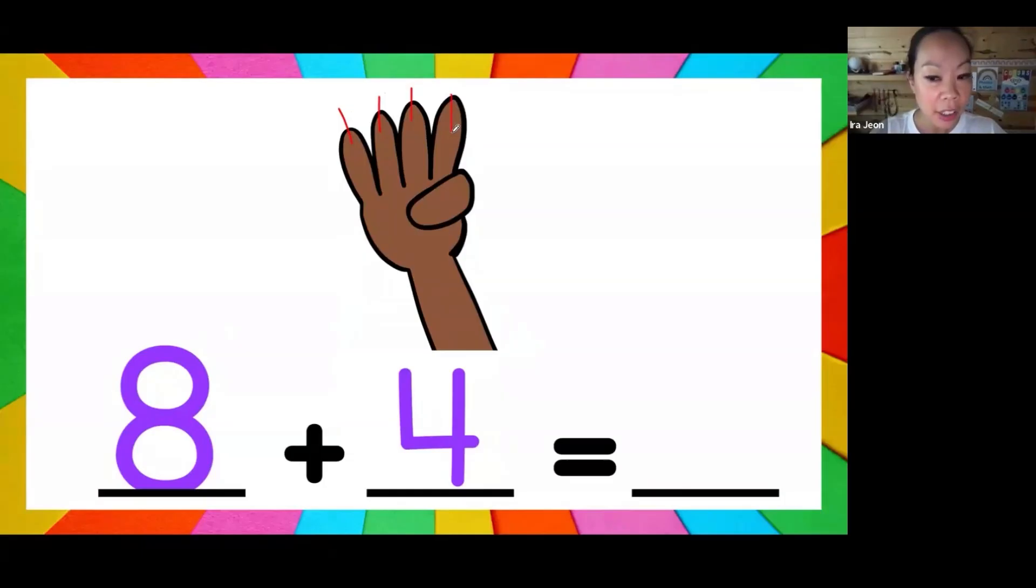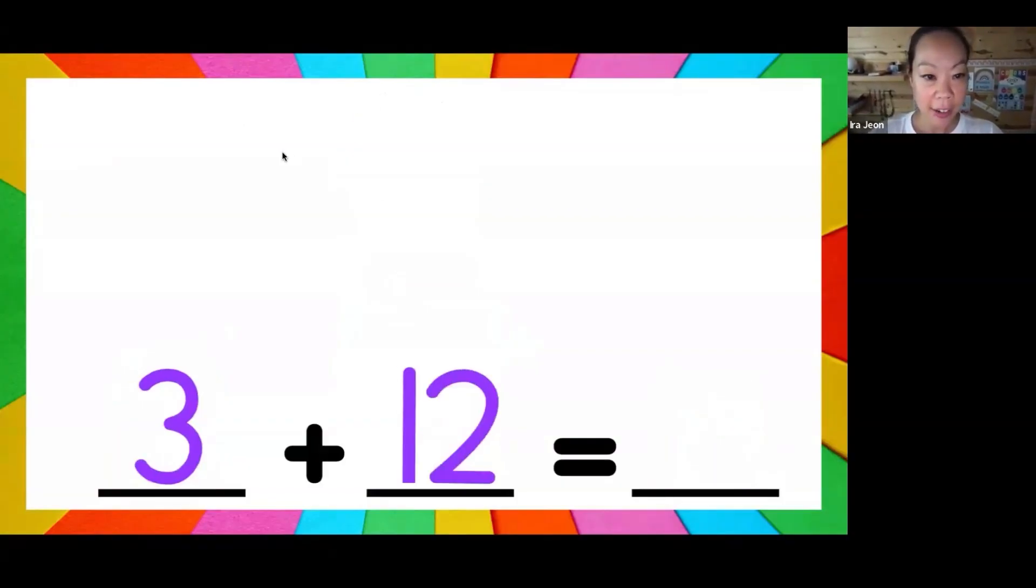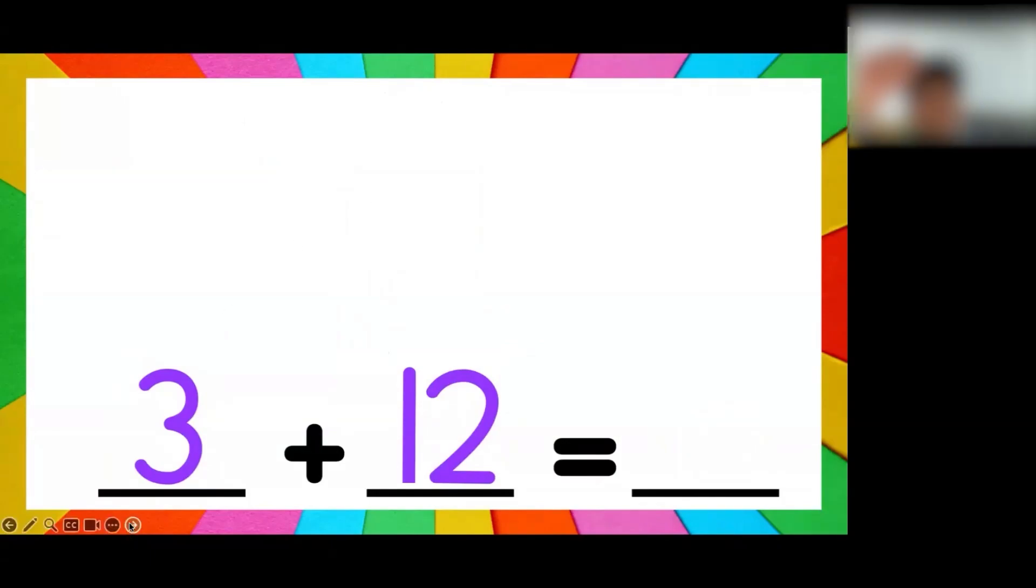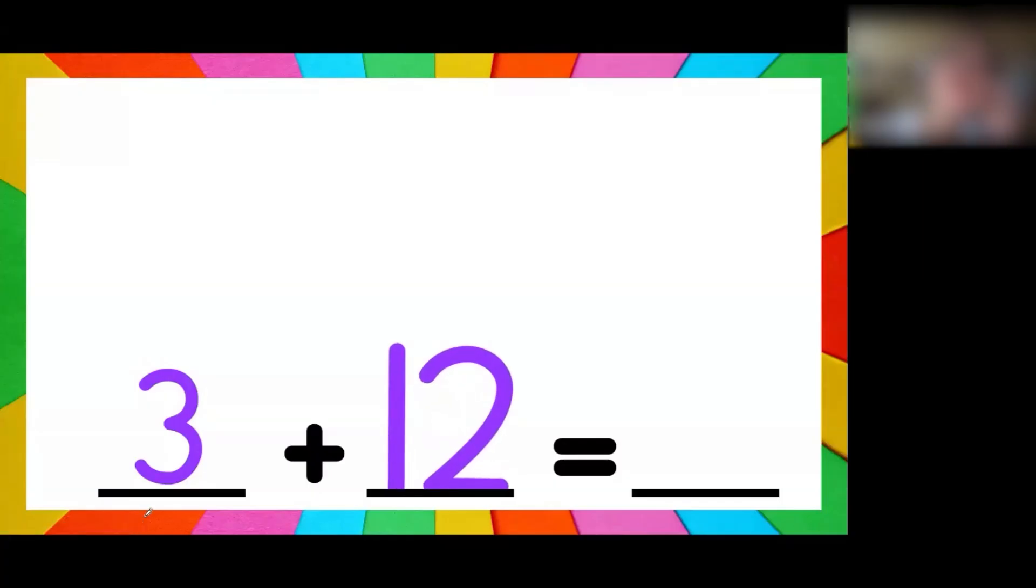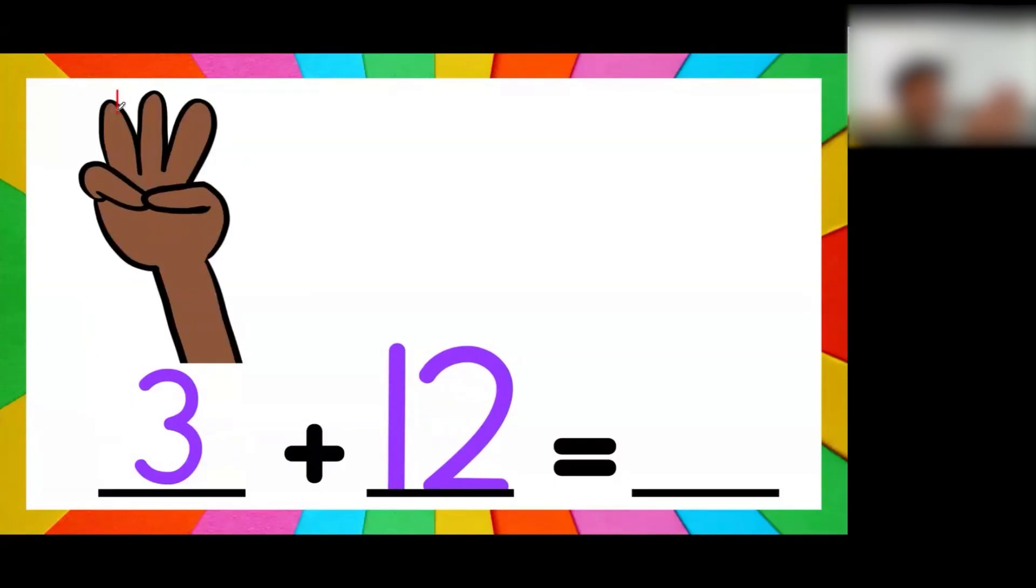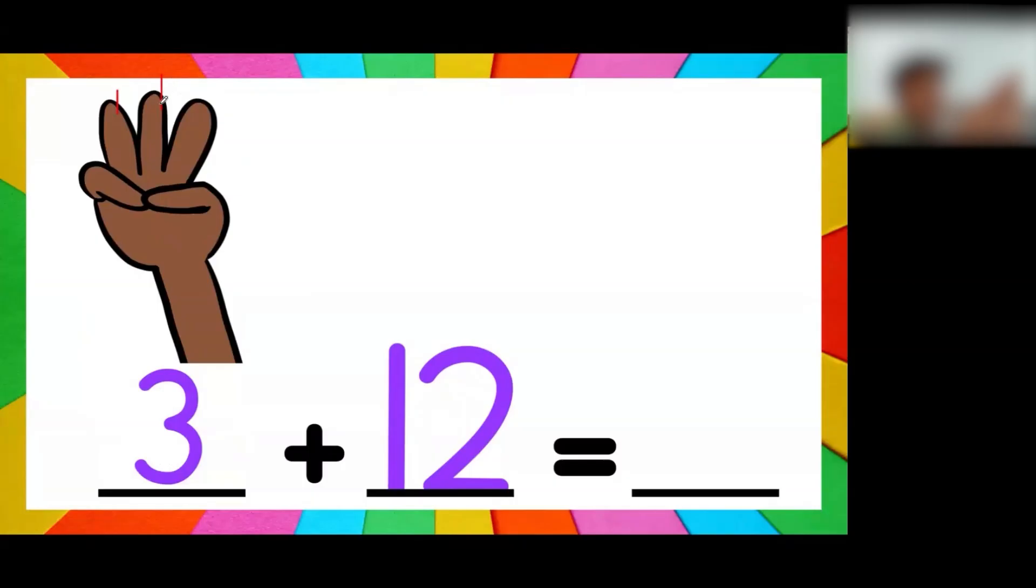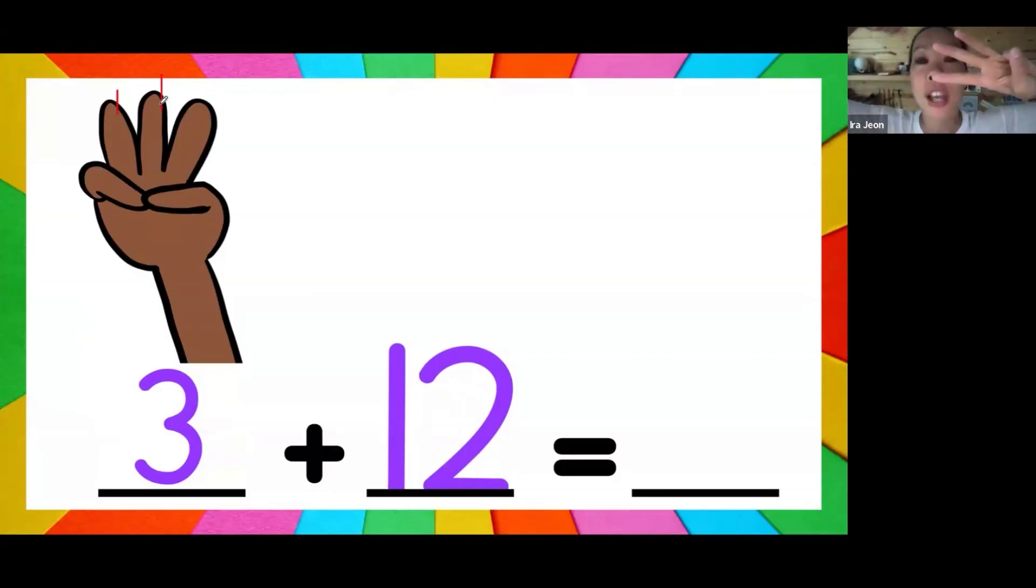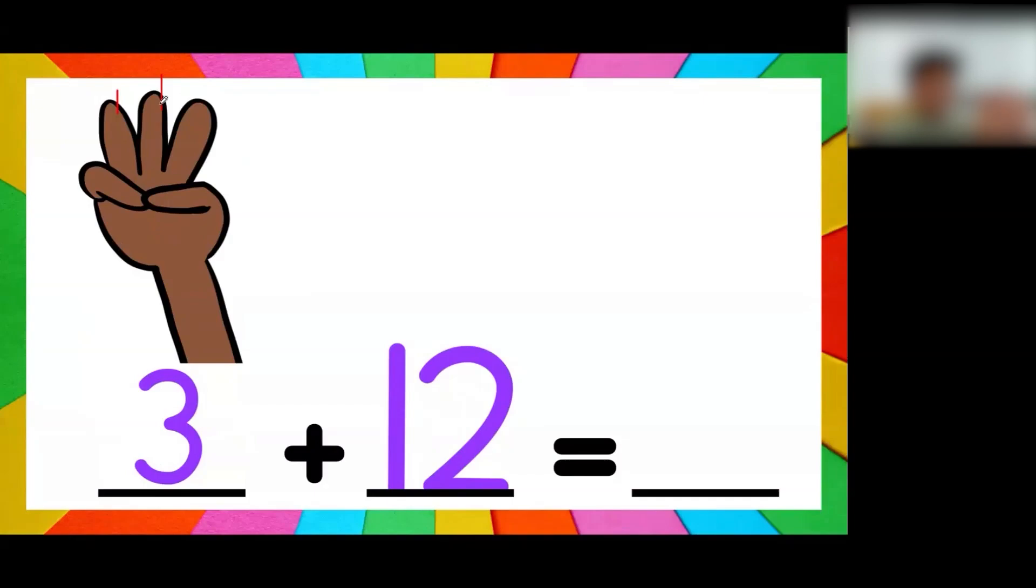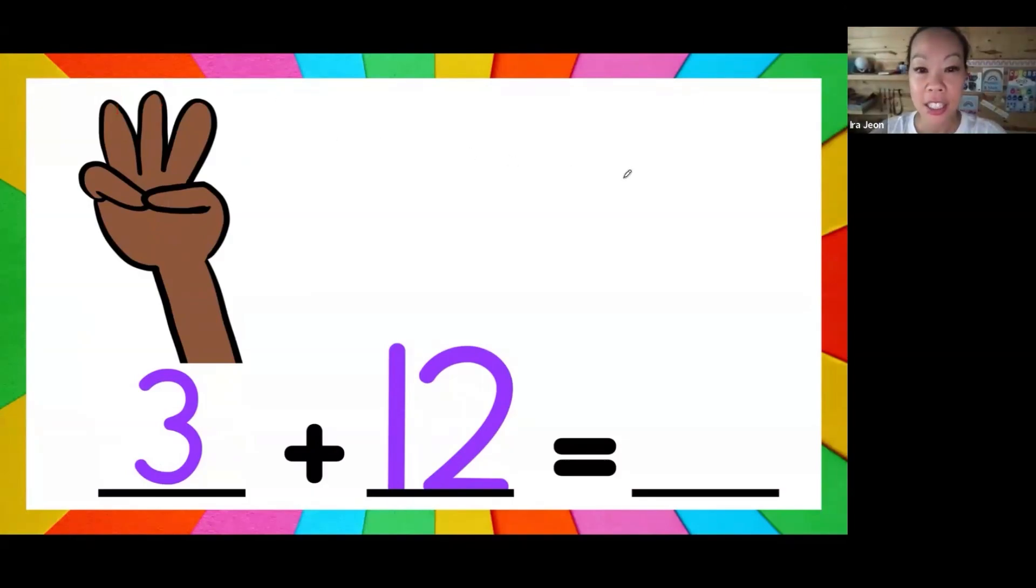Let's try this one. If I have 3 plus 12, you should know right away which number is bigger. Two digit numbers are always going to be bigger than one digit numbers. Yes Ryan, well good. And then what are you going to do? Hold on, 12, 13, 14. Okay, put 12 in your mind, then you count on from 12: thirteen, fourteen, fifteen. Yes, did everybody get 15?